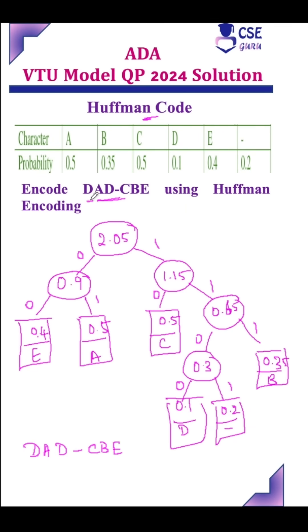So, how to encode? For D, from the root node to the path towards its leaf node where the particular alphabet is present, you need to consider the code. The Huffman code is 1100.